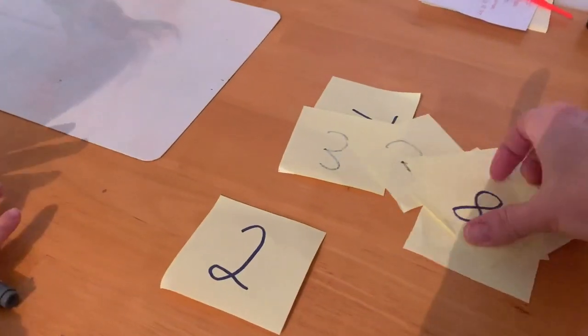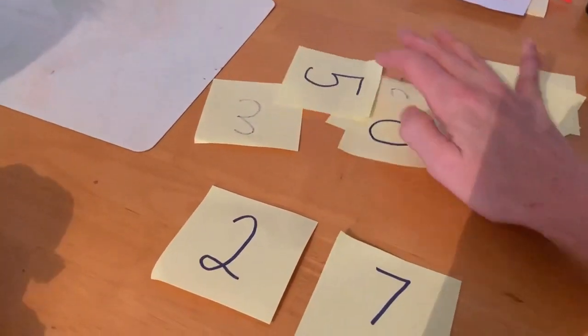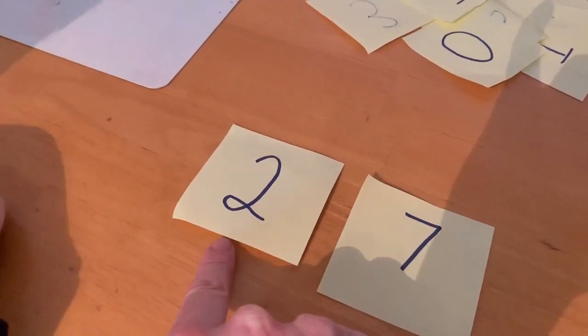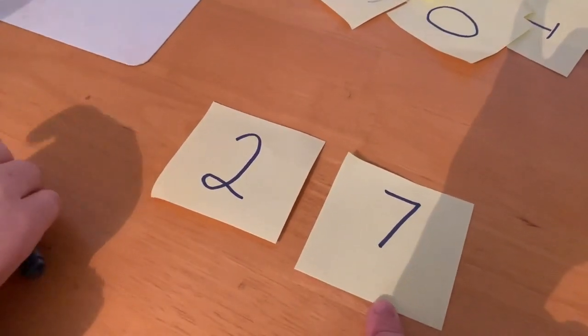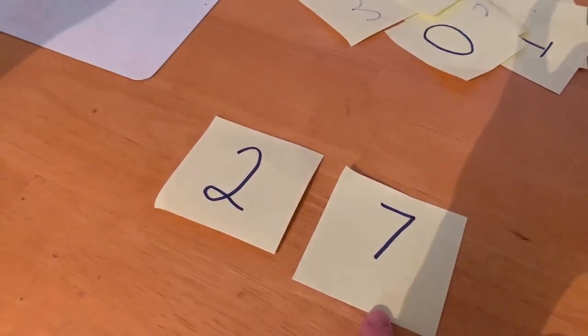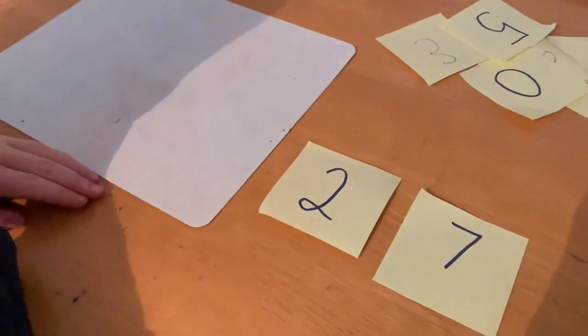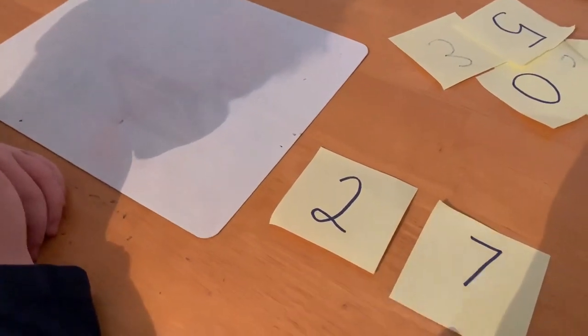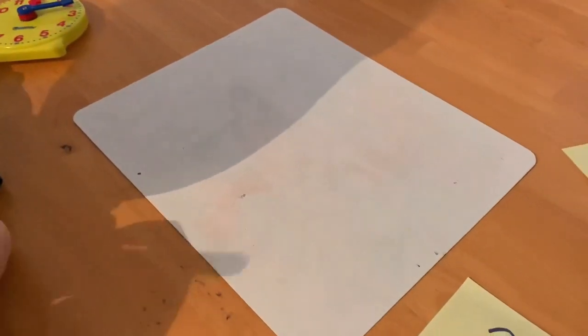So there were 2 red chocolates and 7 blue chocolates. How many were there all together? Can you write that number sentence down that goes with that number story? There were 2 red chocolates and 7 blue chocolates. How many were there all together?